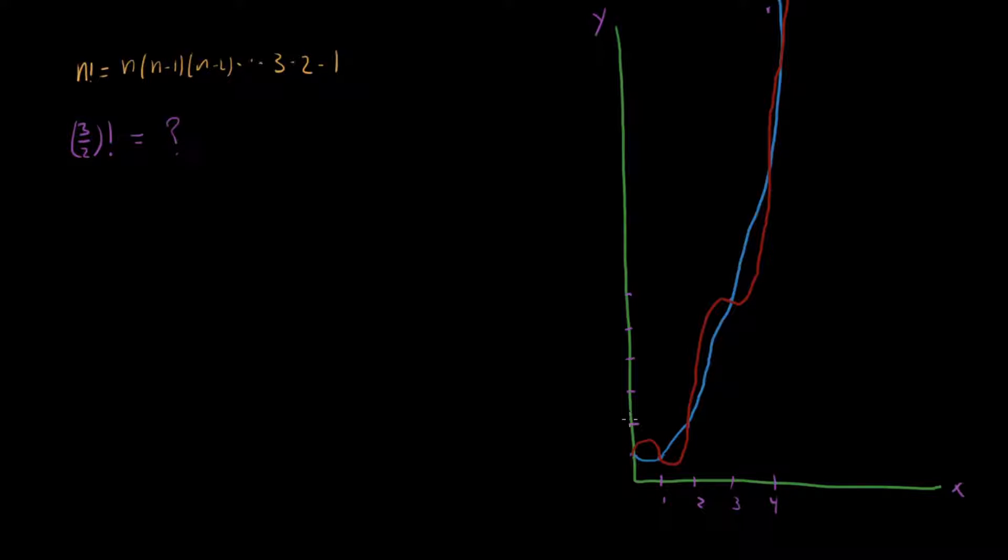How do we know what the right curve is to draw through those points? Well, the answer there is that we need to enforce some extra properties. And there's one property that the factorial function has, which is really important.